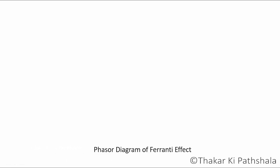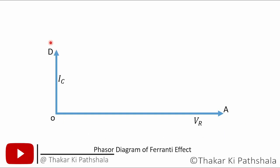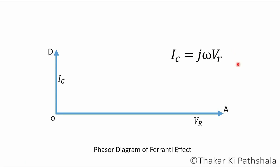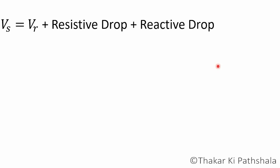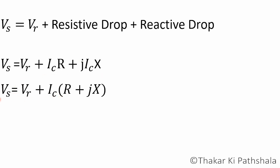Now let's try to understand this theory with the help of a phasor diagram. This is the reference phasor, which is the receiving end voltage Vr, represented by Oa. The phasor for capacitive current Ic is represented by Od, and the value of capacitive current is given by the equation Ic = jωCVr. To draw the phasor for sending end voltage, we calculate: Vs = Vr + IcR + jIcX. Here Ic is common in both terms, so we can write Vs = Vr + Ic(R + jX).